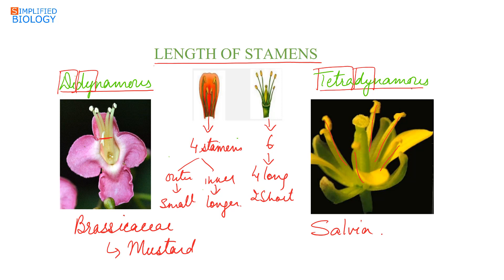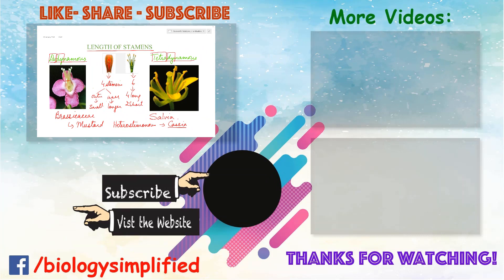When the stamens are of different lengths, it is referred to as heterostaminous — seen in case of Cassia. That's all for today. Please do like, subscribe, and comment, and also visit our website by clicking on the link given below. Thank you for watching.